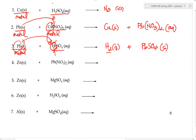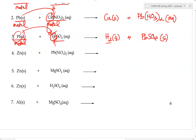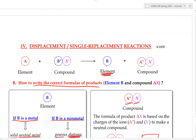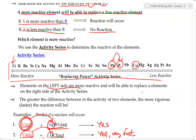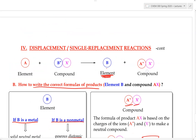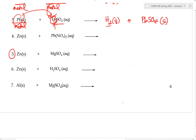Example 8: zinc reacting with a solution of magnesium sulfate. Zinc would need to replace magnesium. On the activity series, magnesium is more reactive than zinc, so zinc cannot replace magnesium. Therefore, no reaction.